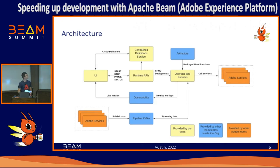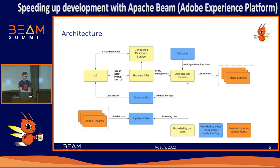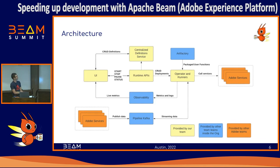From a high-level point of view, we provide four components and reuse services provided by other Adobe teams. We have the UI, the centralized definition service, runtime APIs, and the runners. The UI is supposed to be a one-stop shop for creating and managing streaming processes — a facade for the centralized definition service and the runtime APIs. It also provides some insights into the streaming process through Grafana dashboards.